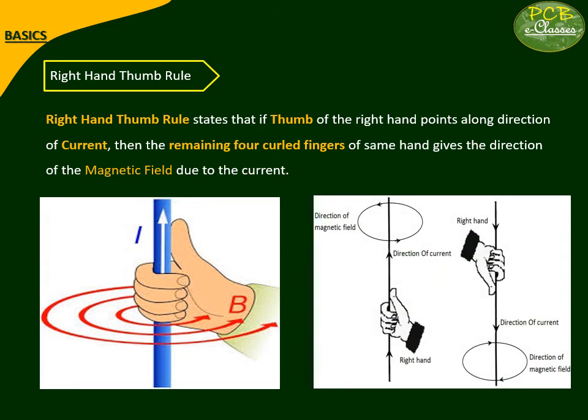You can see on the right-hand side, a conductor where the direction of the current is upward. By applying the Right Hand Thumb Rule, the direction of the magnetic field is anticlockwise. Whereas on the other side, the current direction is downward, so the magnetic field direction is clockwise in nature.